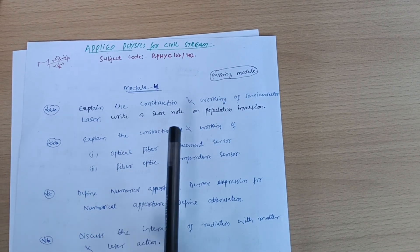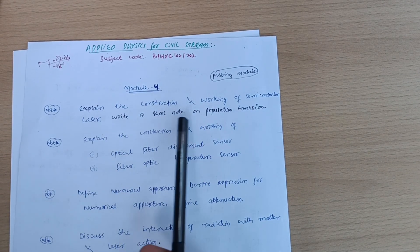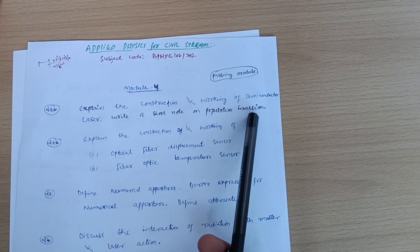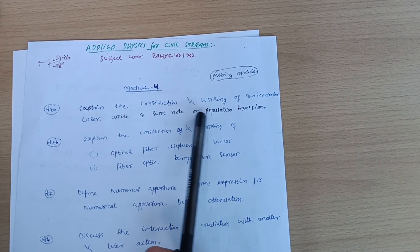Laser: explain the construction and working of semiconductor laser, write a short note on population inversion. This is the super important question. If we consider the 18 scheme also, this was the important question over there.